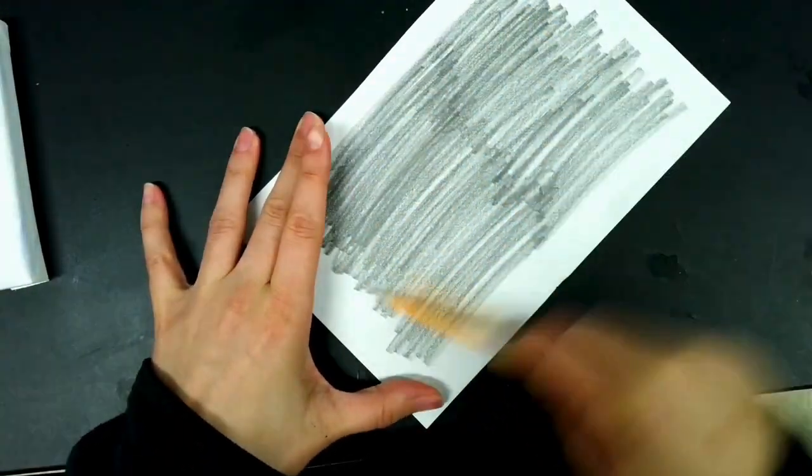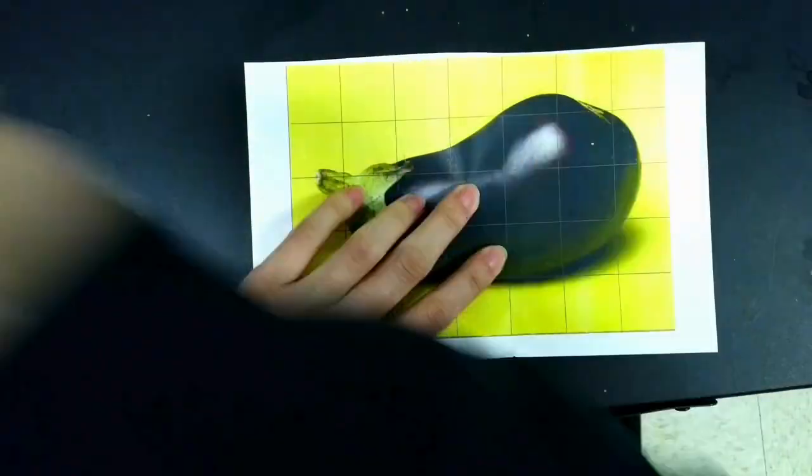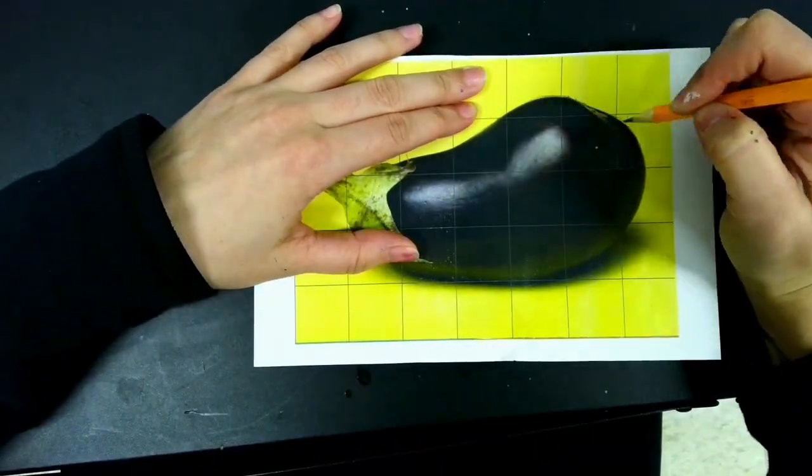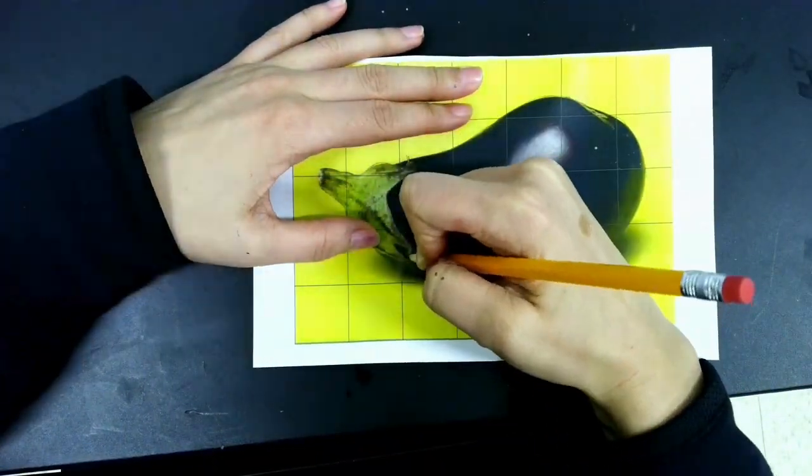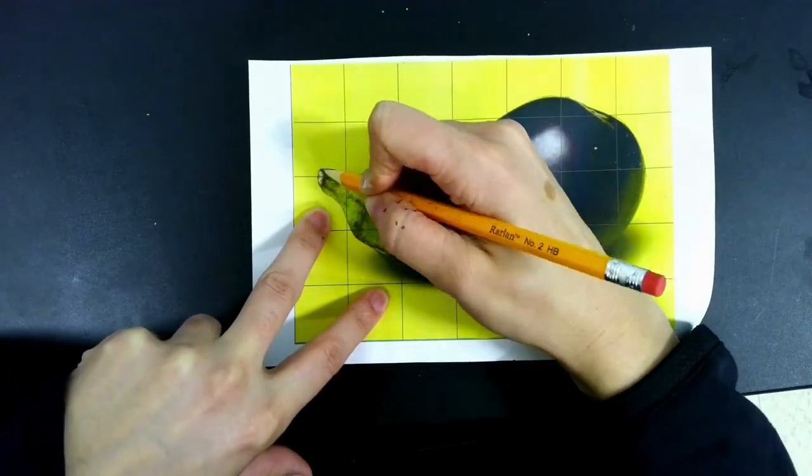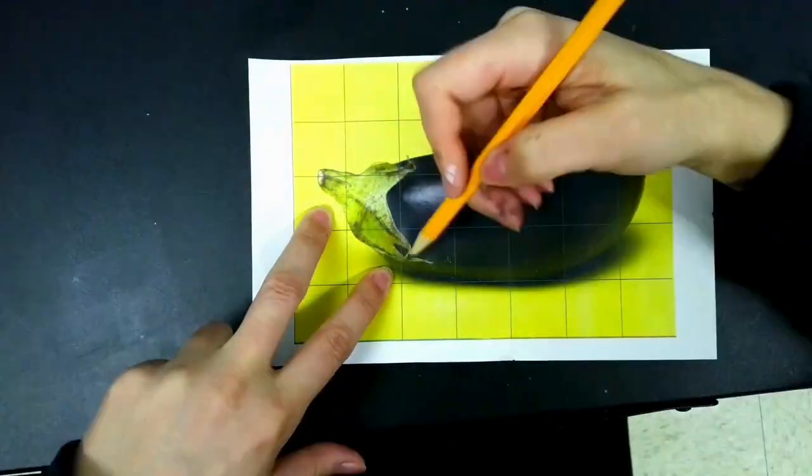This second one is called the transfer method. I'm applying pencil to the back of the paper, and then once you have pencil on the back, you can start flipping it onto your canvas and tracing on that paper so that it transfers to the canvas.